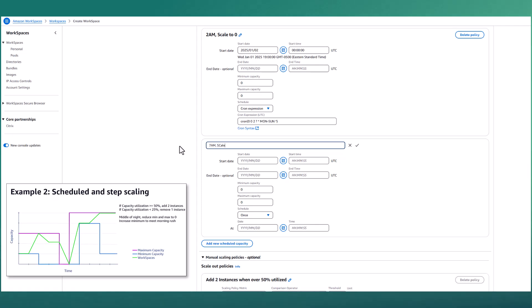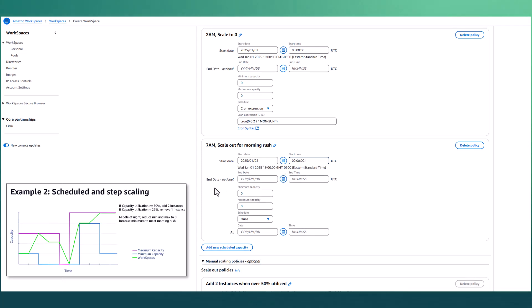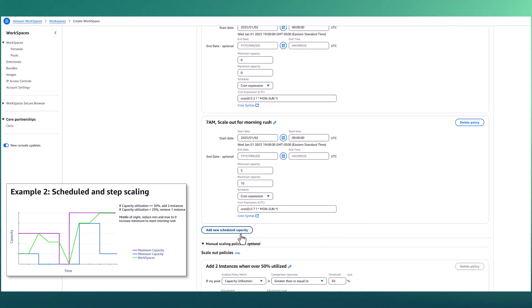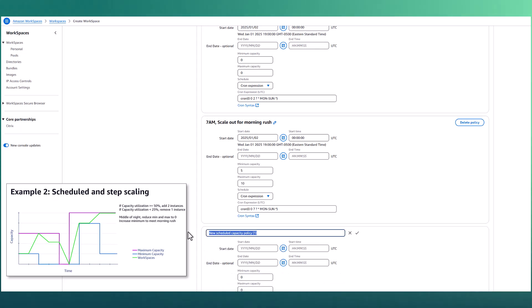I'm then adding a second scheduled capacity policy. This policy will be set to run every day at 7 AM, at which time it's going to set the minimum and maximum capacity values at a high value, thus forcing the pool to scale out ahead of time in order to meet a morning rush. In this case, we're going to be setting the minimum capacity to 5 and the maximum capacity to 10. And putting a cron expression that runs every day at 7 AM to set these new minimum and maximum capacity values. By 7 AM, the pool should be at a capacity of 5. And then our other scaling policies that we had defined earlier will allow it to grow up to 10 as users begin to log on to the system.